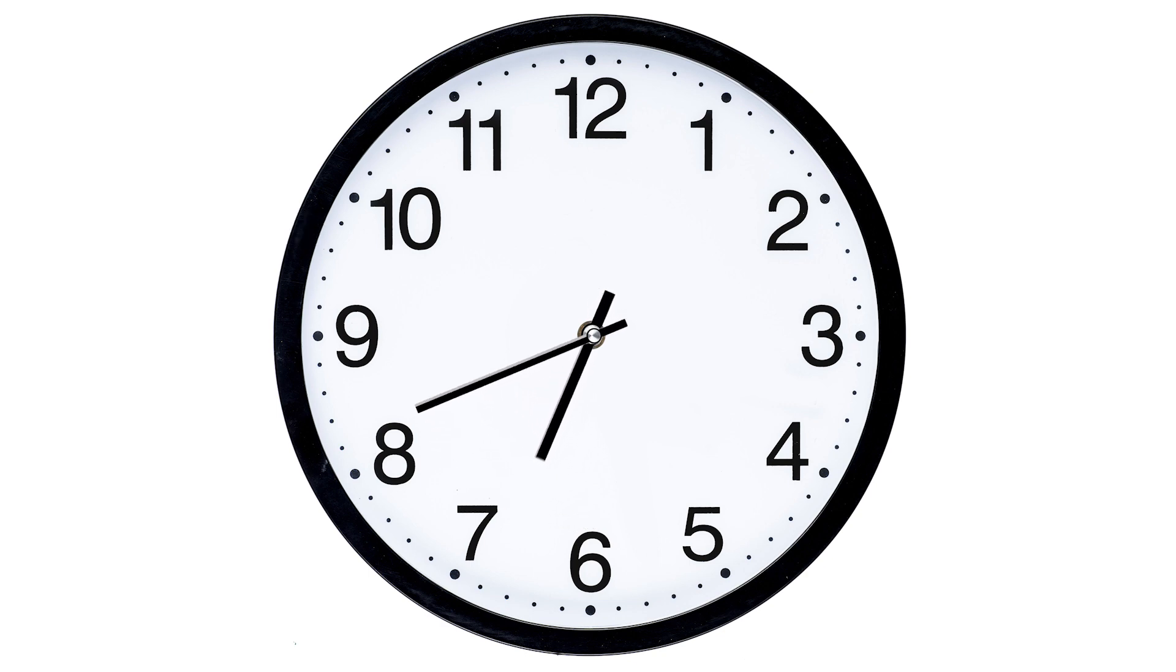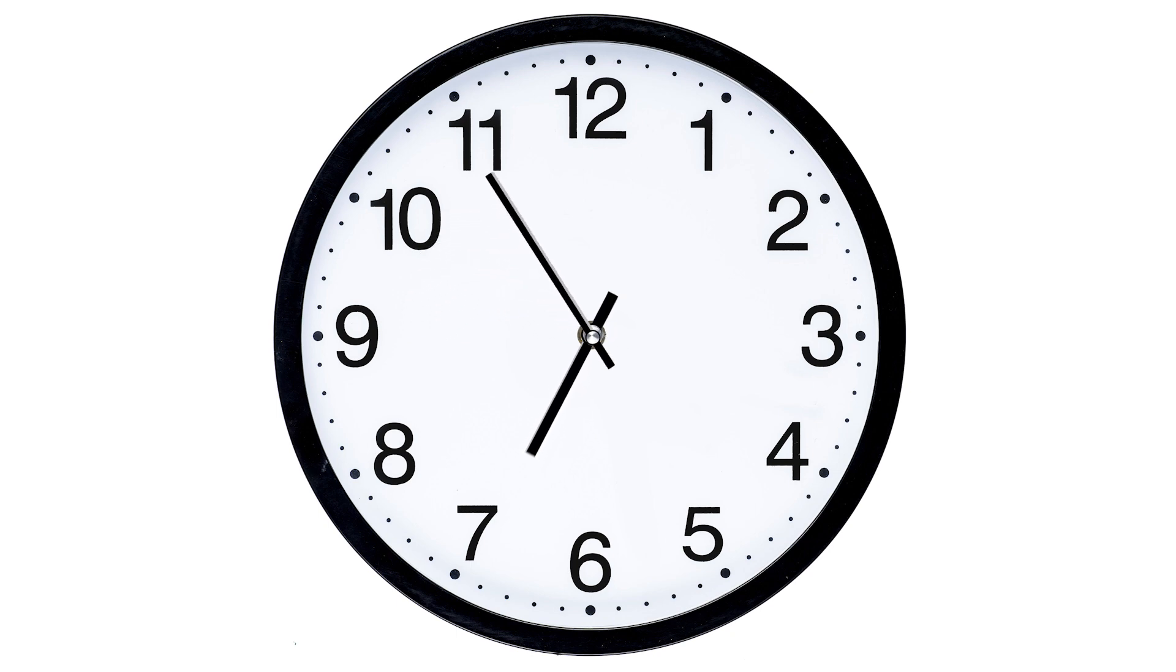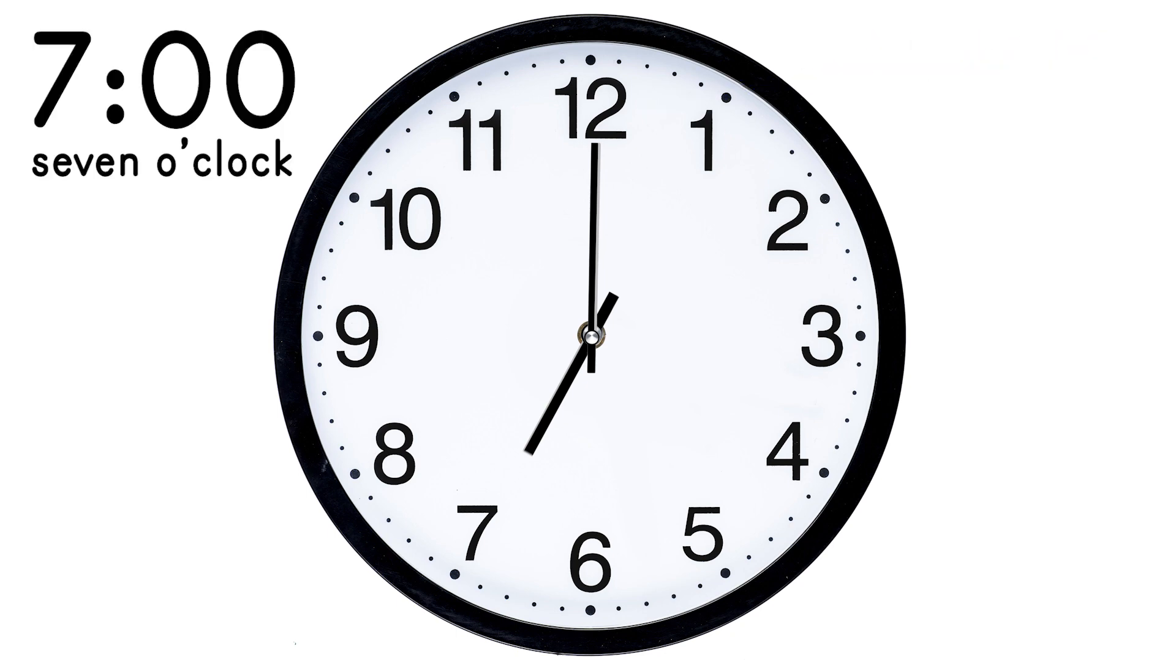Let's turn them again. Okay. Now the hour hand is almost at the seven and the minute hand is pointing at the nine. So we can say 6:45 or we can say a quarter to seven. And if we turn it one more time, then now the hour hand is pointing at the seven and the minute hand is pointing at the 12 again. And I remember that 12 means o'clock. So now it's seven o'clock. Nice job.